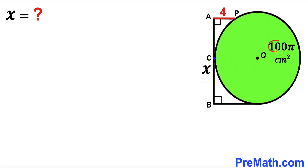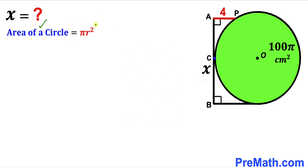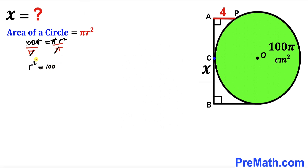We've been given the area of the green shaded circle as 100π square centimeters, so our first task is to calculate the radius. Recalling the area formula: Area = πr². Since the area is 100π, we get 100π = πr². Dividing both sides by π gives r² = 100, and taking the square root gives us a radius r of positive 10 centimeters.